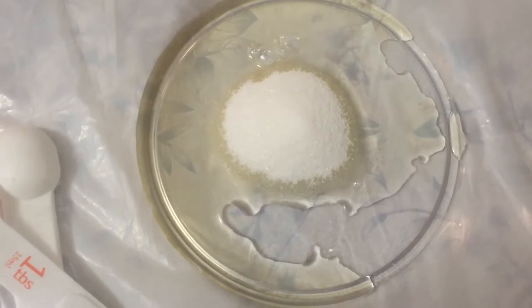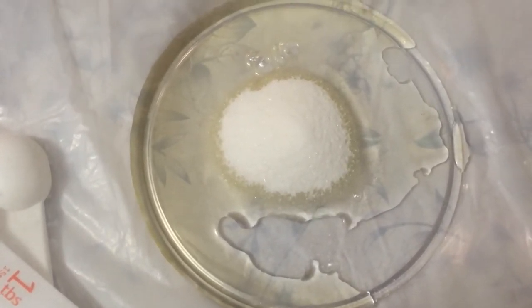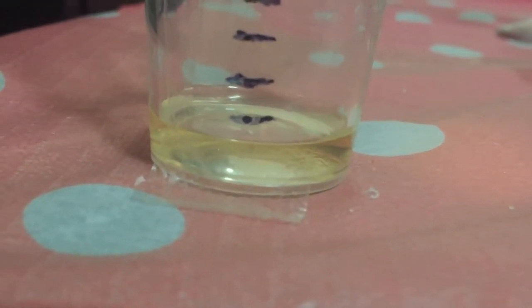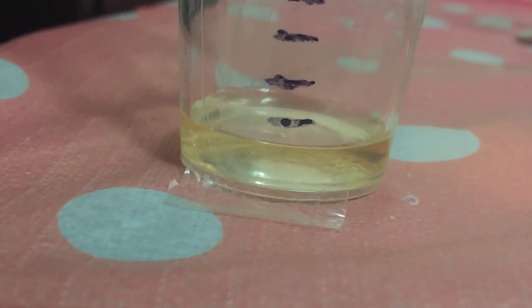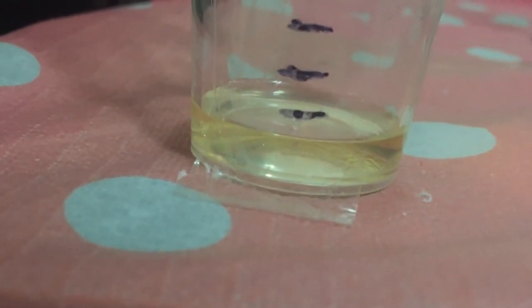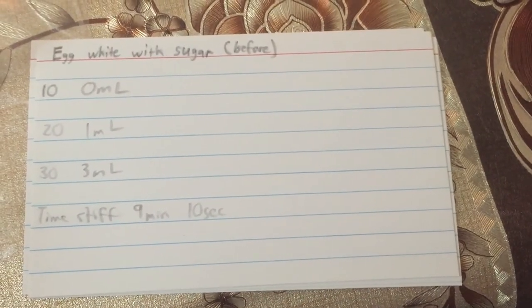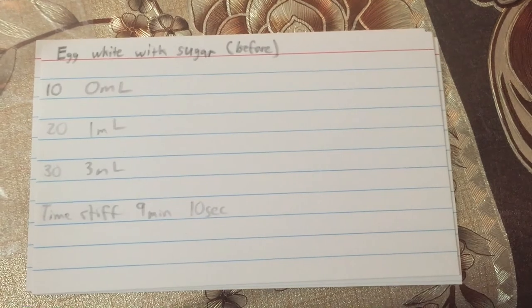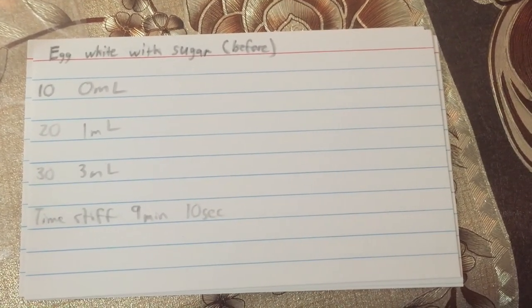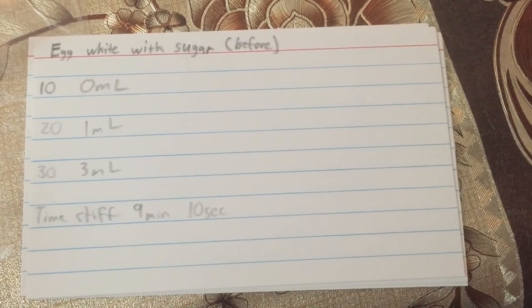Here's the egg white with white sugar added before mixing. The amount of egg white that dripped down from the sugar-before-mixing condition is around 3 milliliters. Here's the full result: zero milliliters at 10 minutes, one milliliter at 20 minutes, and three milliliters at 30 minutes.